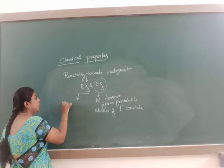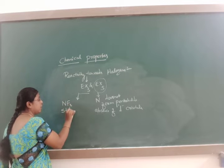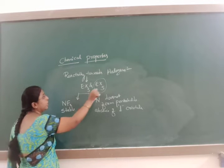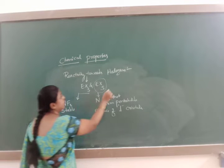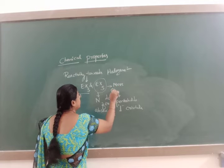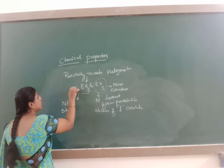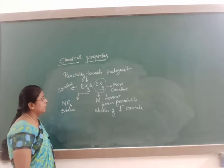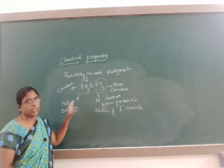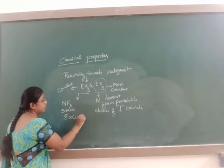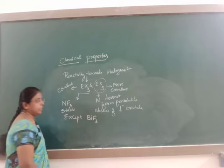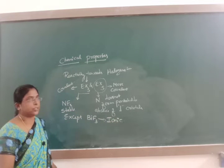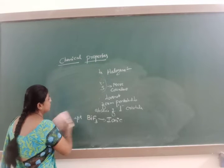Nitrogen will exhibit trihalides. Among all the trihalides, NF3 is more stable. Trihalides and pentahalides are both covalent in nature, but pentahalides are more covalent in nature compared with trihalides. All the trihalides and pentahalides are covalent in nature except BiF3. BiF3 is not covalent in nature — it is ionic in nature. This is all about reactivity towards the halogens.